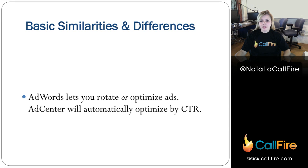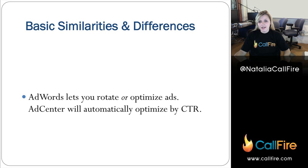Something else that's different is that AdWords will let you either rotate your ads or optimize your ads. That means that sometimes for the same keyword, you can have four different ads that you're running against each other. Most people will set those ads to automatically optimize, so AdWords will run the ad that does better more often. AdCenter will do that automatically, so it won't let you have any other option than to optimize by click-through rate. AdWords, however, lets you rotate them evenly. Sometimes we want to run two ads against each other and actually get numbers on which ones are being clicked more often if they're run at the same rate, just because you want to see that this part of the ad is the only part that's different, and that part of the ad is then causing this percent drop in click-through rate.